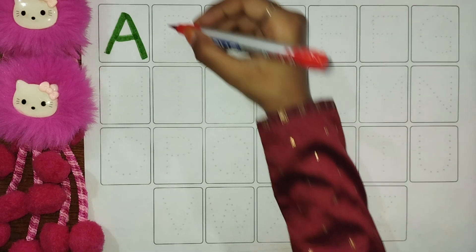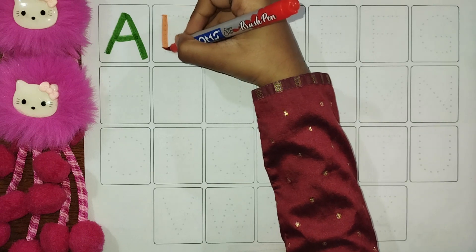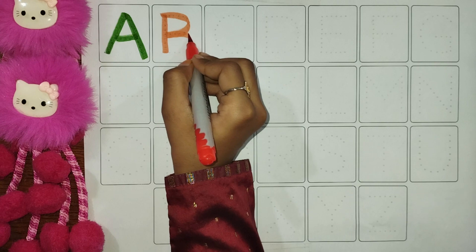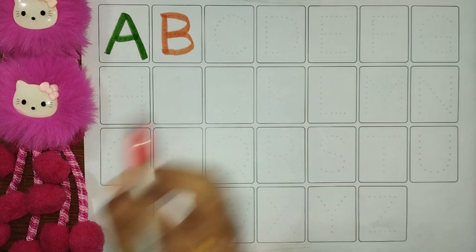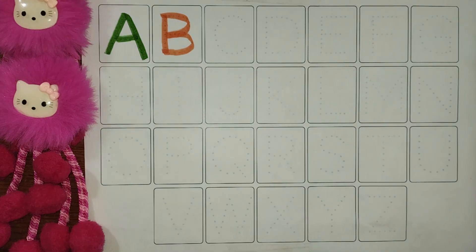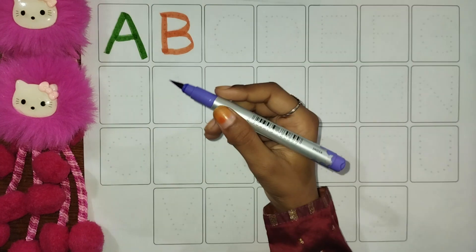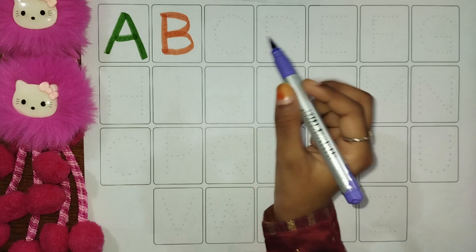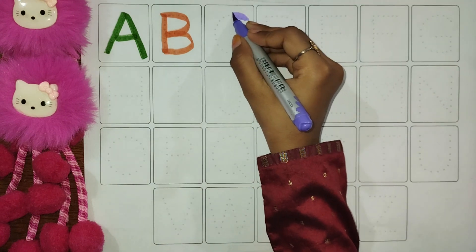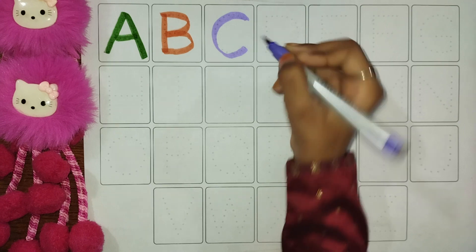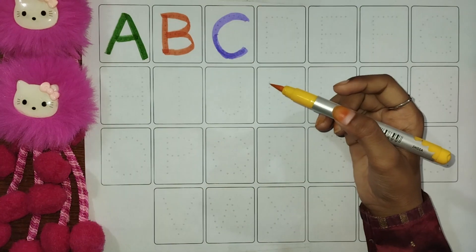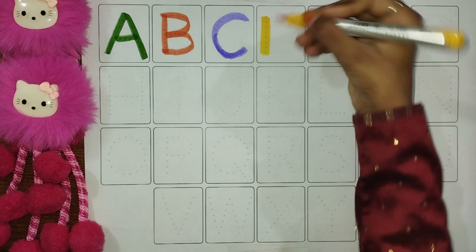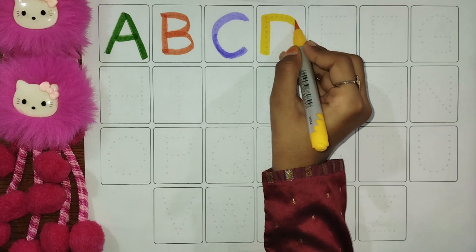B for ball. C for cat. Yellow color. D for dog.